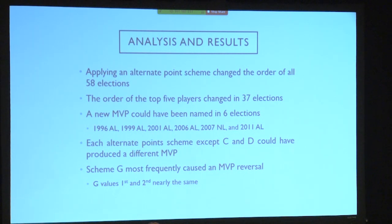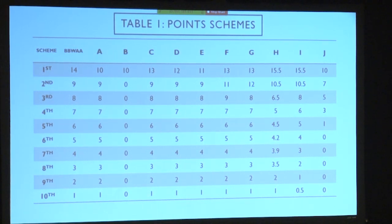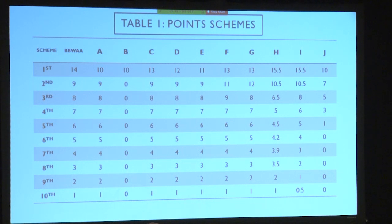Scheme G is especially interesting — it was the one that most frequently resulted in a reversal. Scheme G values second place almost as highly as first, which makes sense because in some years there's an obvious winner. In the past three or four years there have been four elections where the MVP had at least 27 out of 30 first-place votes. But in some years it's highly contentious, and Scheme G, which values second place as still quite an honor, produced a lot of reversals.